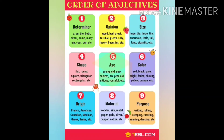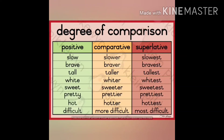Next, we have compound adjectives. A compound adjective is formed when two or more words are joined together to modify the same noun. The words are usually separated with a hyphen. For example: 'he submitted a ten-page assignment,' 'don't give me half-baked cookies,' 'they have a two-year-old daughter.' Here 'half-baked' and 'two-year-old' are compound adjectives.